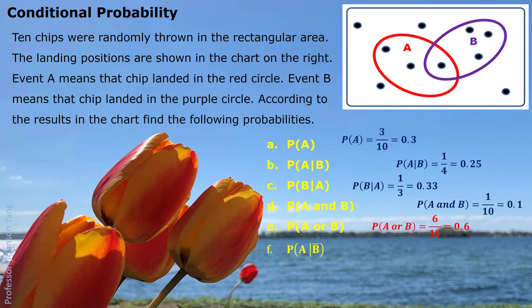Part F: P(A|B̄). It means if we know the chips are not in the purple circle, how much chance is the chip in the red circle? B̄ means B did not happen. We only focus on those chips not in the purple circle — there are 6 of them. Within these 6 chips, how many are in the red circle? Two of them. So P(A|B̄) is 2 out of 6, approximately 0.33 or 33.33%.